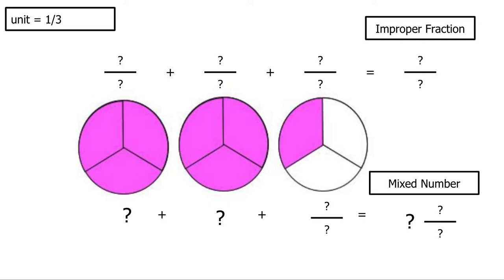We will begin by doing the improper fraction. So let's identify how much of the first hole is shaded. And I notice 1, 2, 3 pieces out of 3 pieces are shaded.